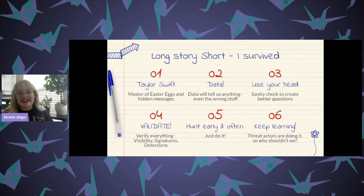So as we wrap up here, let's go with this kind of summary page. I talked about a lot of different things, so let's just recap it. Taylor Swift, she is a mastermind of Easter eggs and hidden messages. The data will tell us anything that we want to know, even if it's wrong. And then also make sure that you're sanity checking and making sure that you're creating better questions each time you're asking questions of the data.